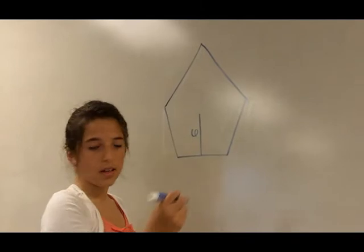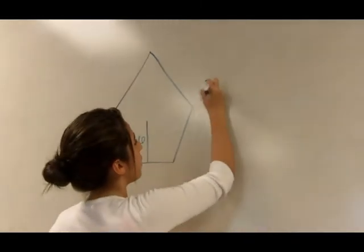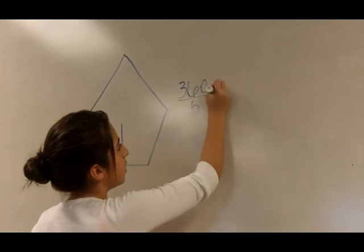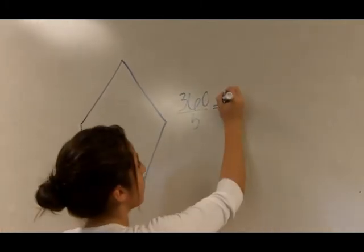First, you have to find the central angle, and you have to do 360 by 5, and that's 72.